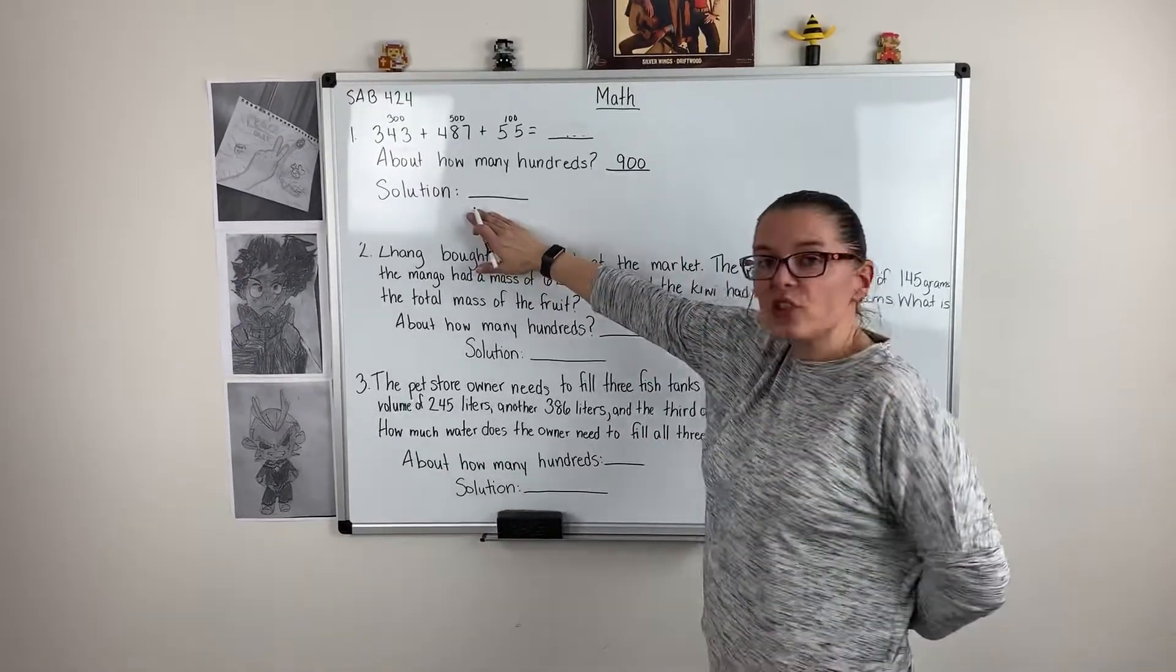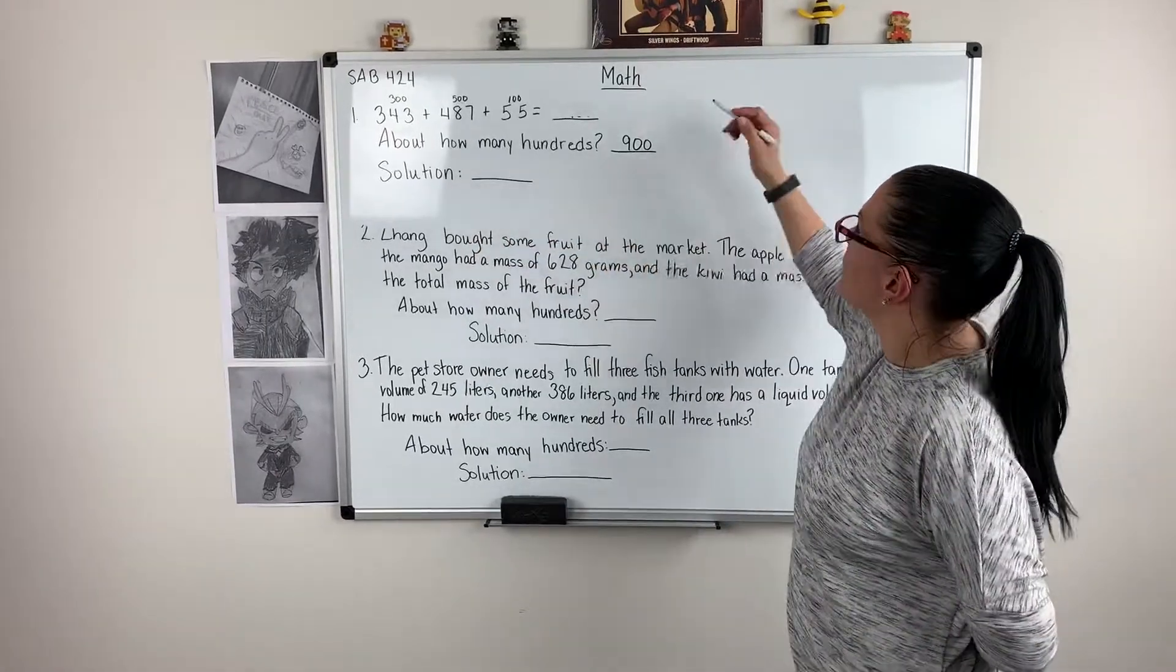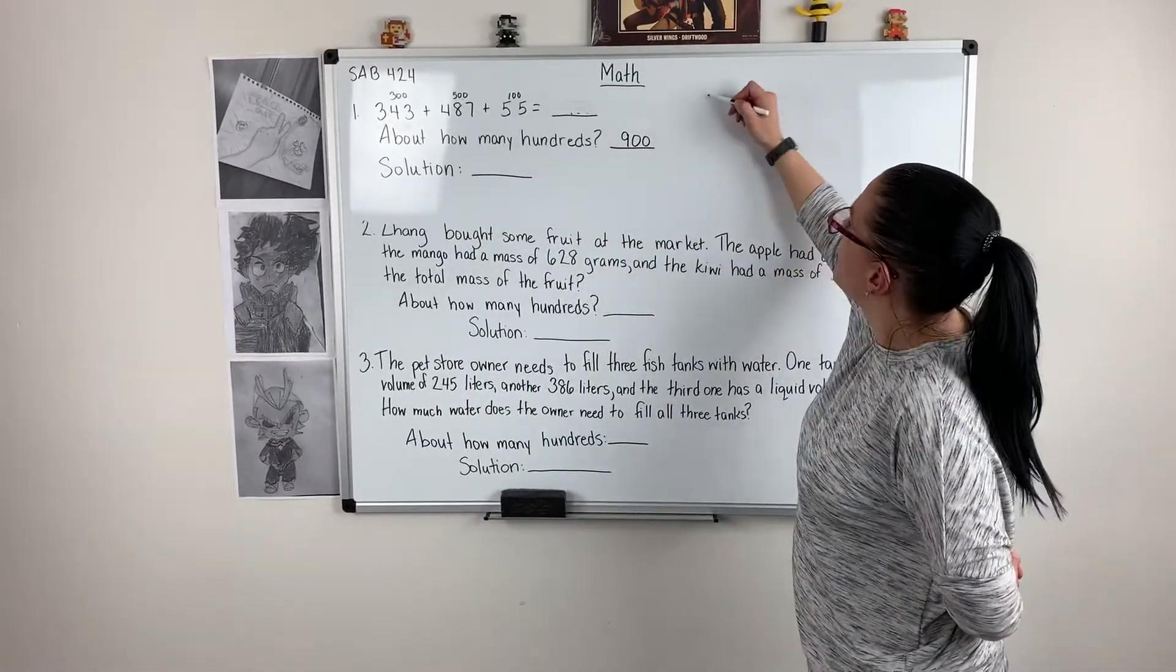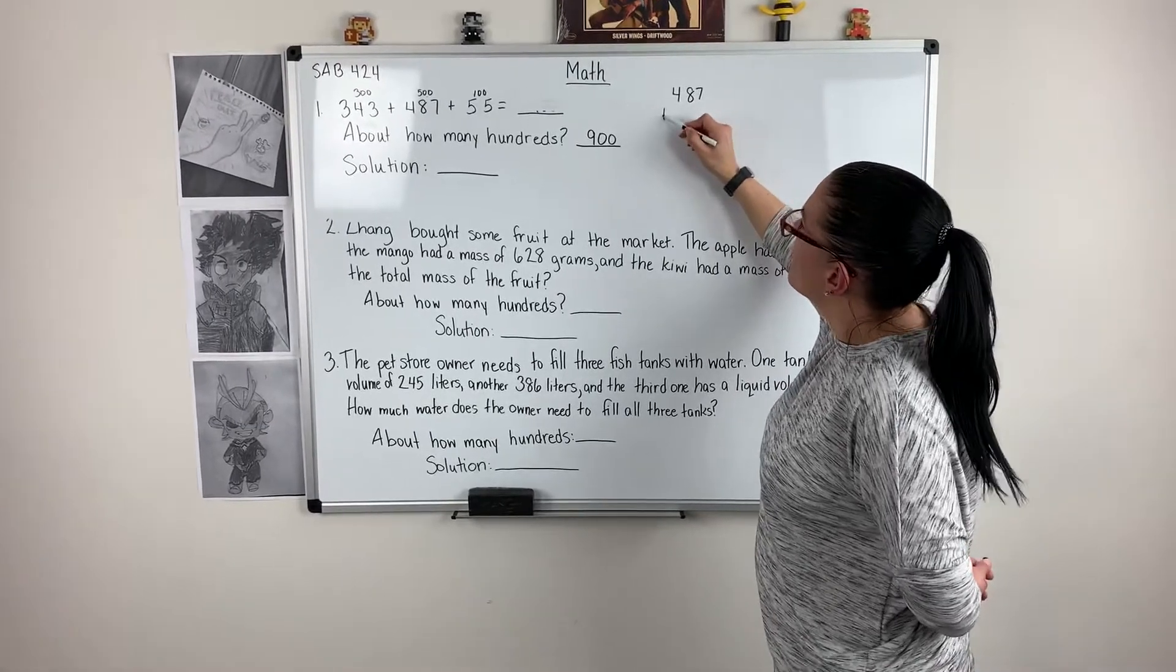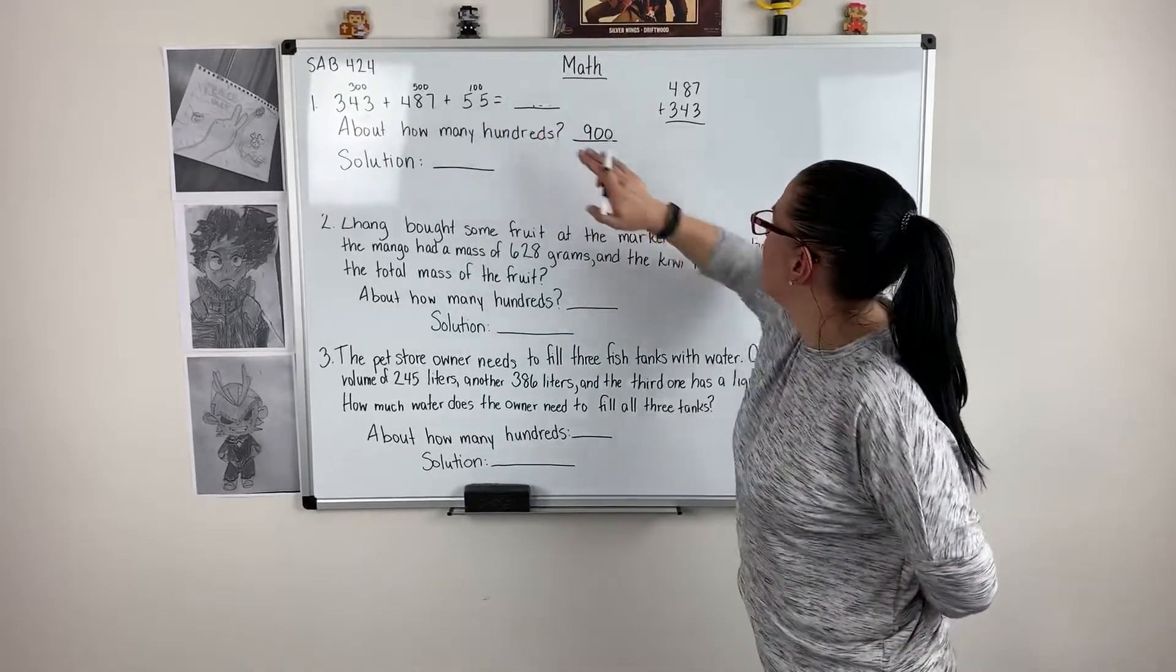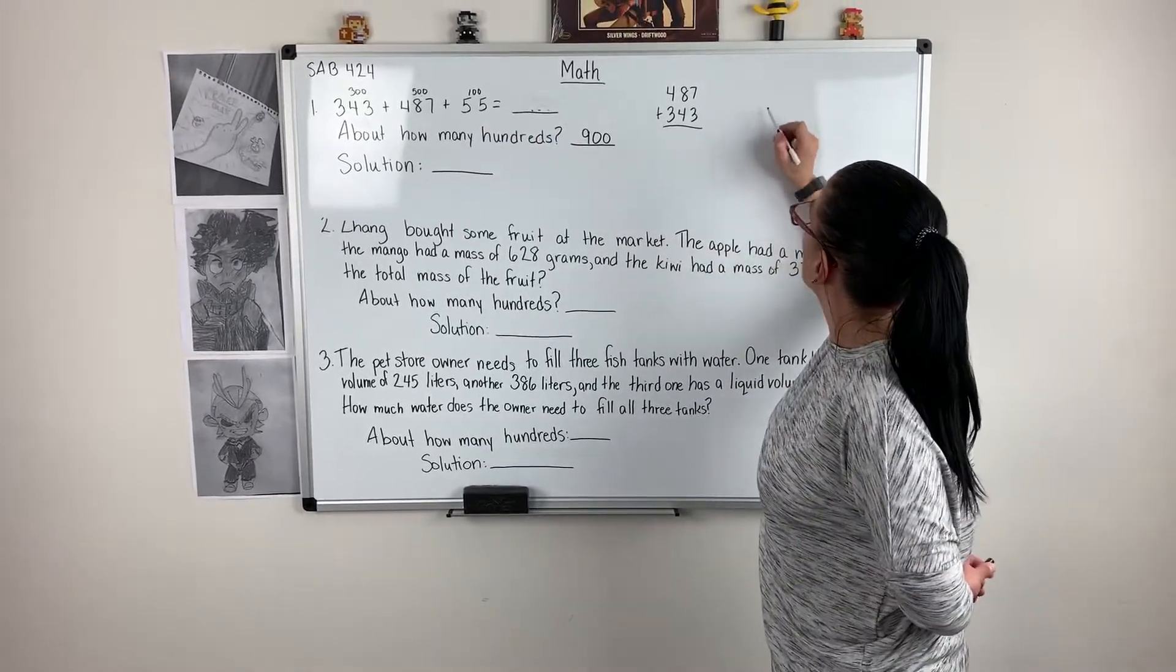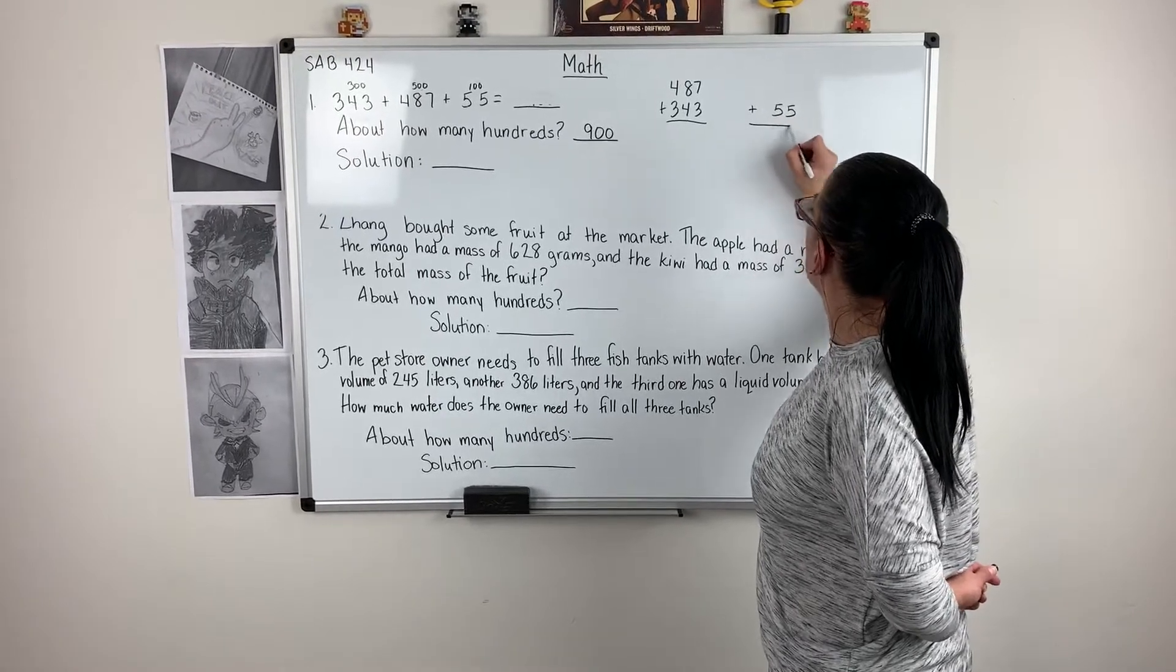So now I need to find the solution. They want me to figure out how much it is when I add these three numbers. I'm going to start with my two biggest numbers: 487 plus 343, and then I need to add my 55 to my other problem. So I'm going to write my 55 down here because I know I still need to add that in.